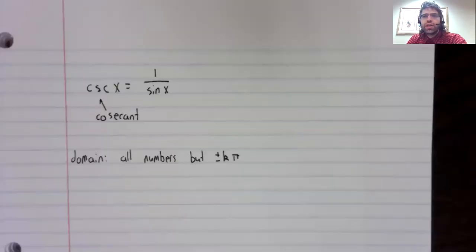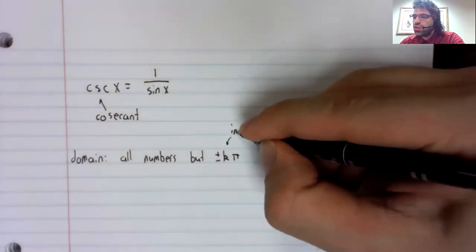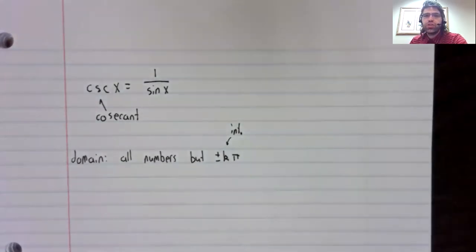Once again, there's an infinite list of numbers that aren't in the domain. Any number of the form k pi, where k is an integer.